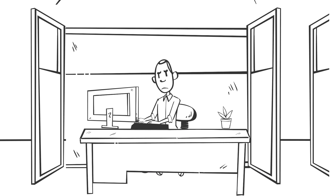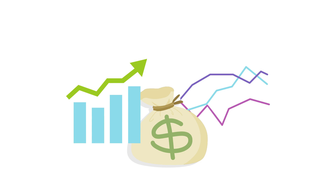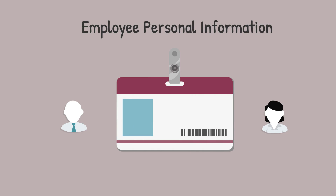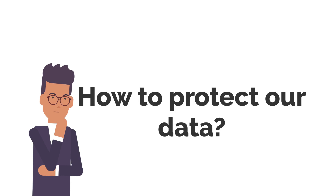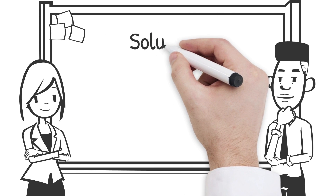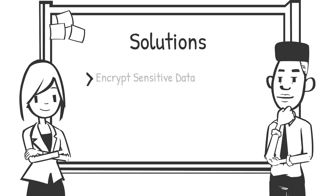The first goal of security is confidentiality. It's all about keeping sensitive information, such as company financials and personal employee information, protected from unauthorized access. For example, a company might encrypt sensitive data, like credit card numbers, to ensure that only authorized parties can access it.